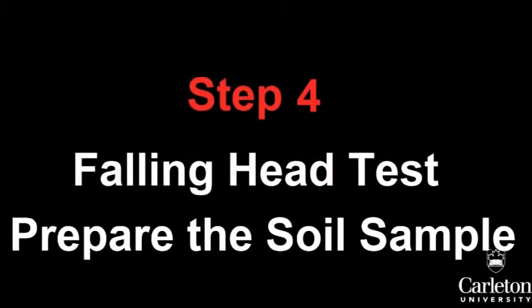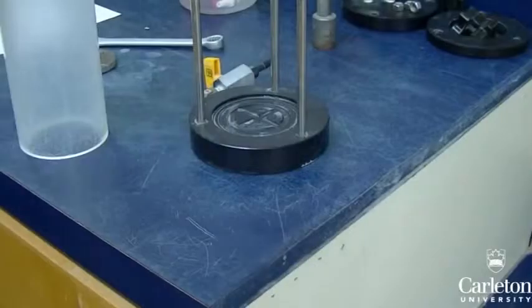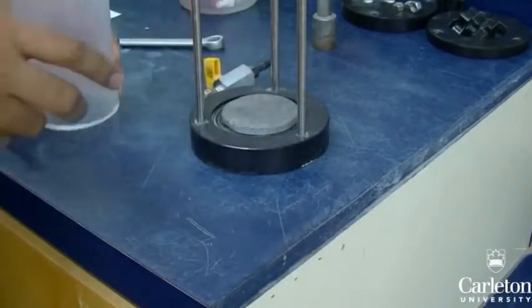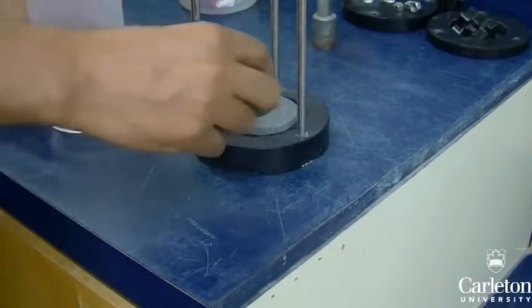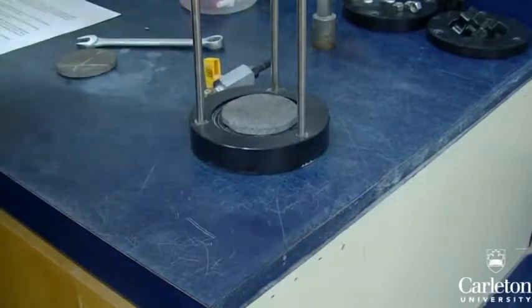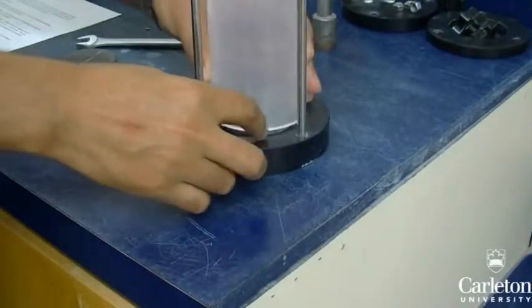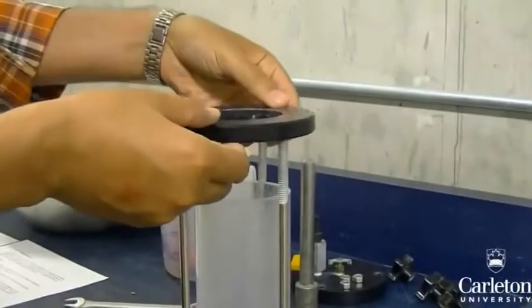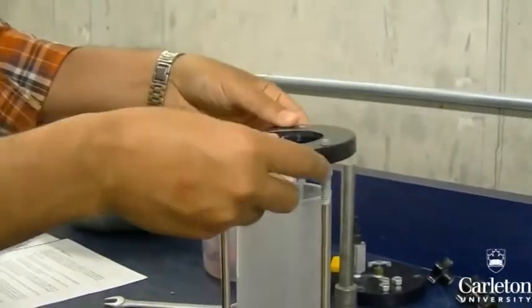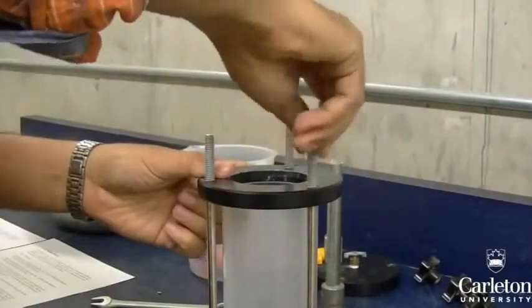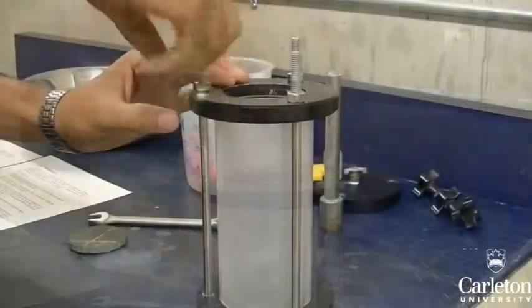For the falling head test, first we need to put together the test cylinder. Unlike the constant head test which uses a screen, the falling head test uses a porous stone. Place the porous stone on the base, then place the tube which acts as the cylinder's walls over top of it. Thread the end cap with a hole in it onto the three protruding screws and secure it with three nuts to create a tight seal.